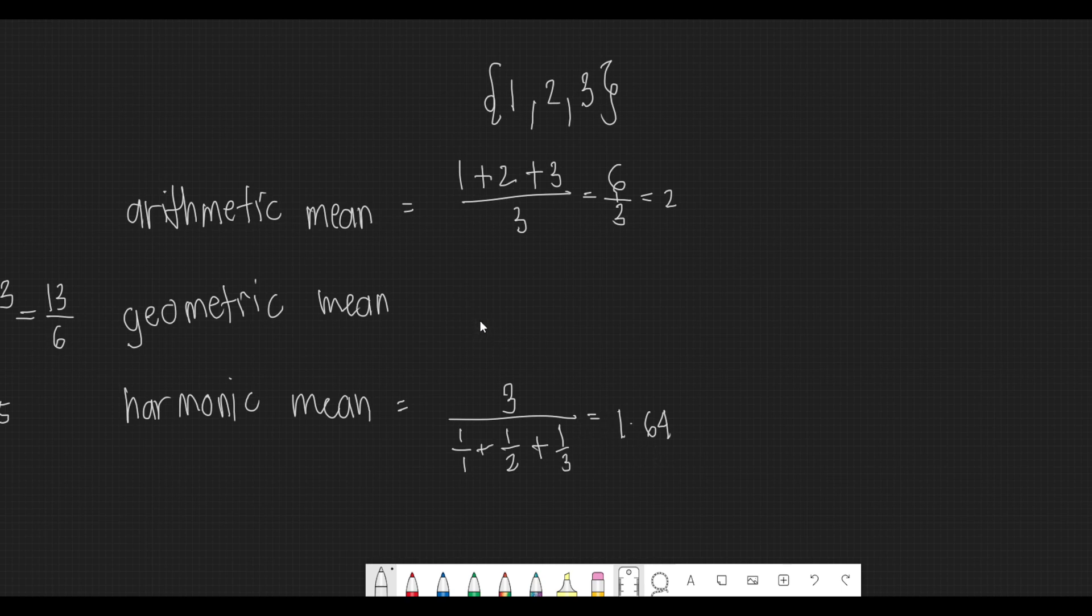For geometric mean, we need to multiply these numbers. So that would be 1 multiplied by 2 multiplied by 3. And after multiplying them all, we need to get the root depending on the number of datas.